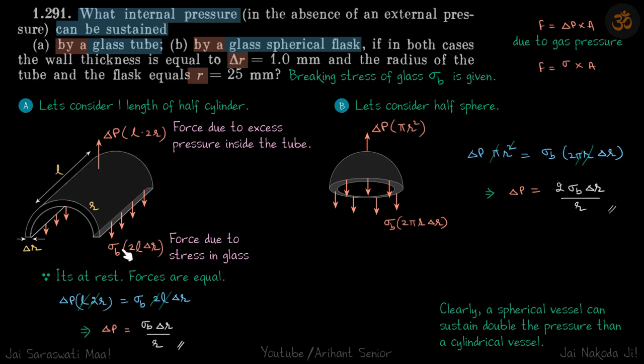The pulling force is coming from the stress in the material, so we need to find the maximum value of that. Let's assume that it has reached its maximum stress, that is sigma b. Our force will be sigma b into area.